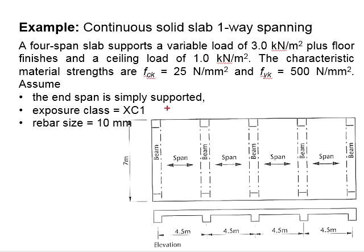The characteristic strength for the concrete is fck = 25 and for steel is fyk = 500 N per mm square. It is assumed that the end span is simply supported, the exposure class for the concrete is XC1 and the rebar size is 10 mm.